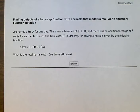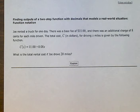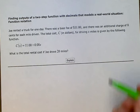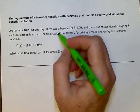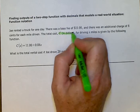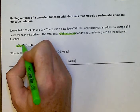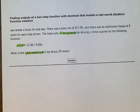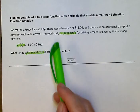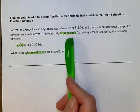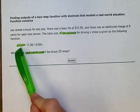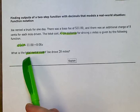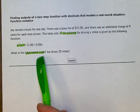Okay, first we're just going to start off by labeling what we know. So, C is the total rental cost. Can you see how it says the total cost, C, in dollars? That's the C in the equation, and that is what we're looking for. What is the total rental cost if Joe drove 20 miles?